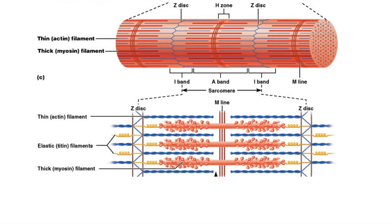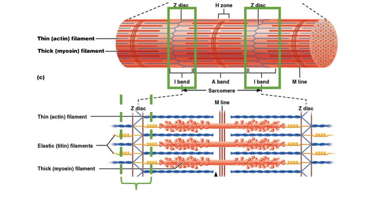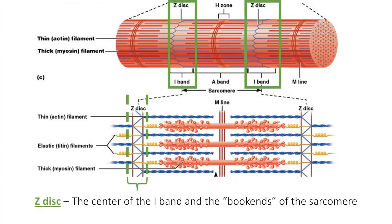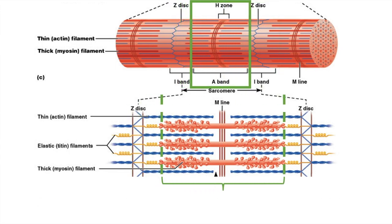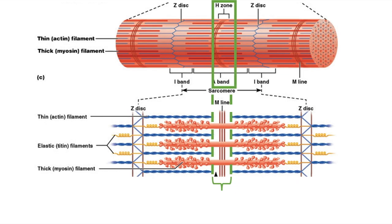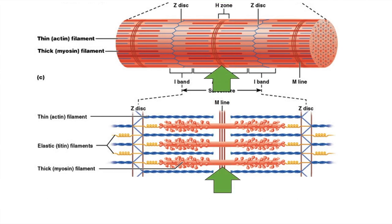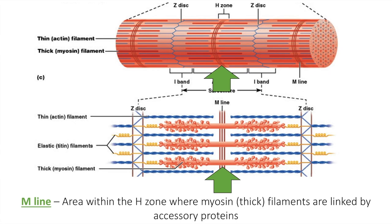Remember that the sarcomere is the contractile unit of muscle from Z-disc to Z-disc. The I-band is a section of the sarcomere where only actin is present. The Z-disc is the center of the I-band and forms the bookends of the sarcomere. The A-band is a section of the sarcomere where myosin and actin overlap. The H-zone is an area within the A-band where only myosin is present. The M-line is an area within the H-zone where thick myosin filaments are linked by accessory proteins.